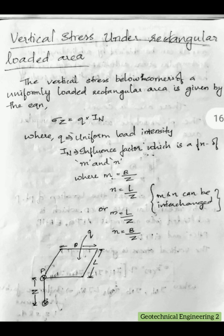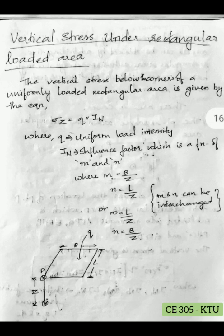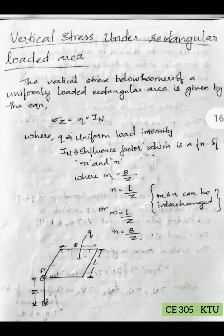I suffix N is the influence factor, which is a function of M and N. Referring to the figure at the bottom, it shows a rectangular area with a point P, and we must find the vertical stress intensity at a point below it at some depth. The rectangle has dimensions B and L, which are shown clearly in the figure.